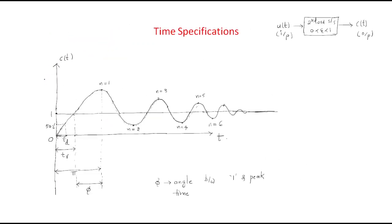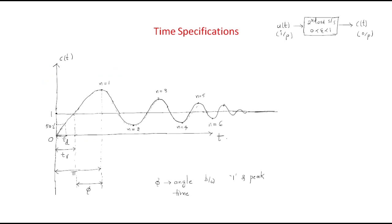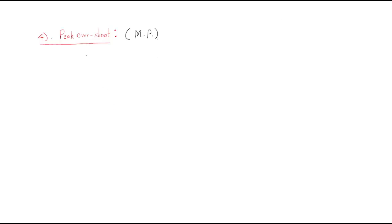The meaning of peak overshoot is the magnitude between the unit magnitude (final steady-state value) and the peak magnitude at peak time TP. This difference is known as the peak overshoot, represented as MP. MP equals the magnitude at peak time minus the magnitude at steady state (t → ∞).